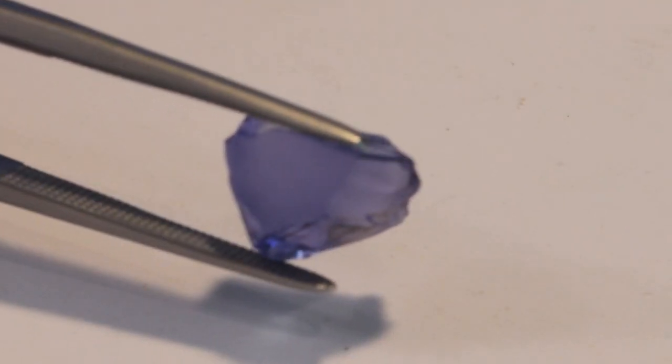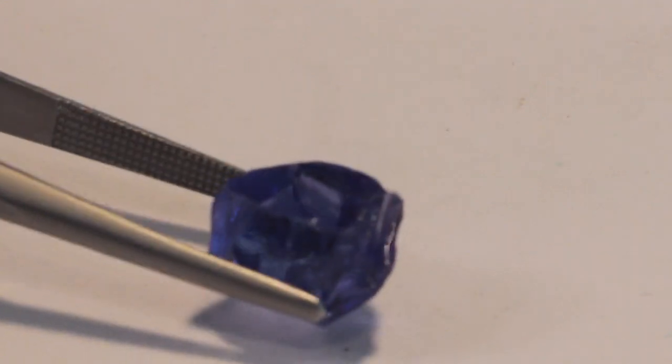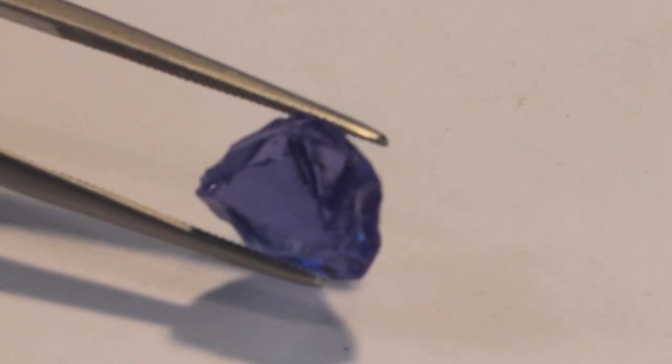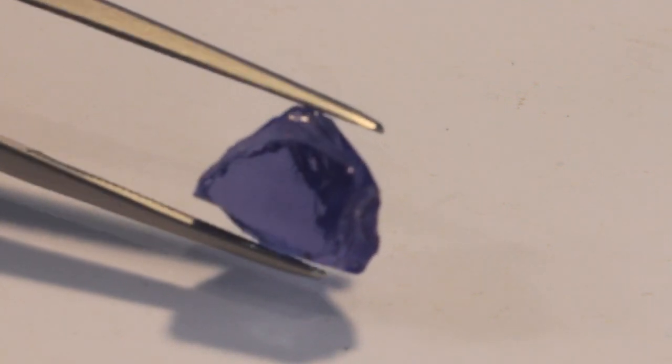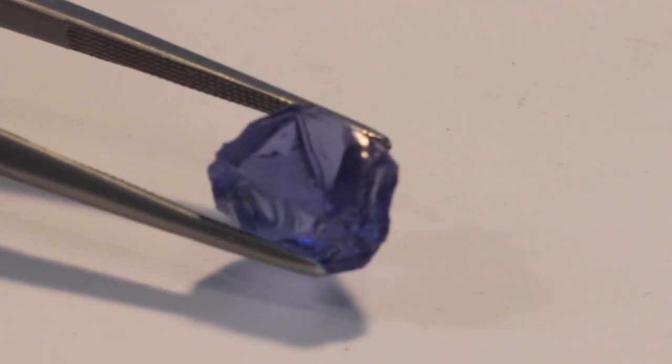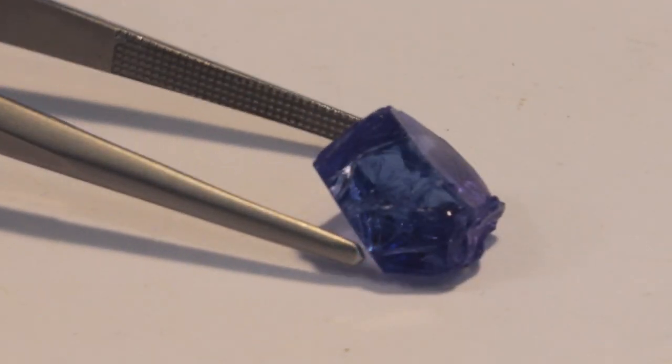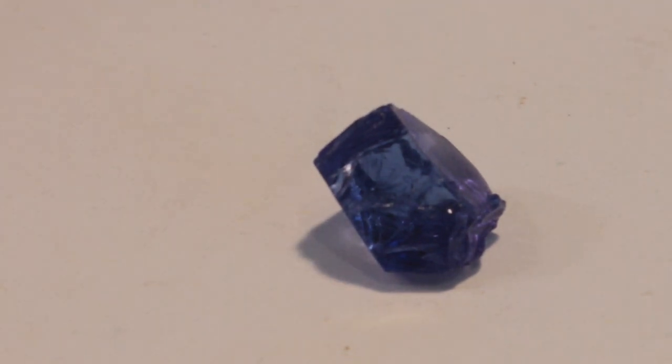Tanzanite is the blue and violet variety of the mineral zoisite, and the color is caused by small amounts of vanadium. Tanzanite is a relatively newcomer to the gemstone world, as it was first discovered in 1967.